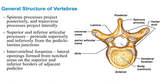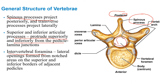The spinous processes project posteriorly. The superior and inferior articulating processes protrude from the pedicle-lamina junctions. The intervertebral foramen is different from the vertebral foramen — the vertebral foramen is for the spinal cord, while the intervertebral foramen is for the spinal nerves exiting. There's a vertebral notch, a disc raising it up, and then a space between two vertebrae for the spinal nerve — that's the intervertebral foramen, or IVF.